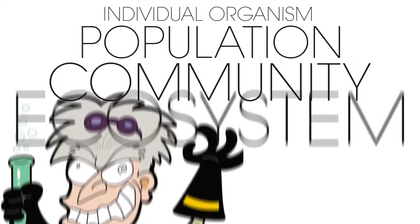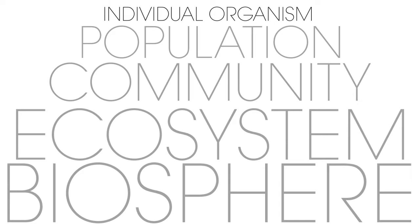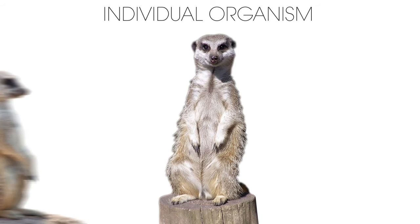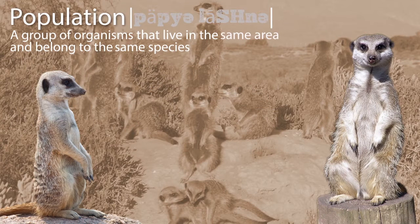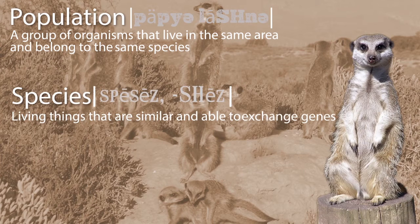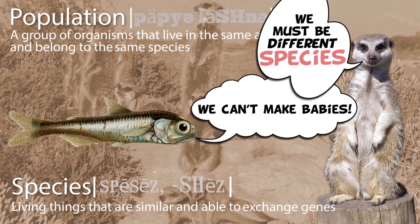Ecologists, the men and women who study ecology, have organized living things and environments in different ways. It starts with an individual organism, or a single life form. This individual organism probably belongs to a population, or a group of organisms that live in the same area and belong to the same species — species being living things that are similar and able to exchange genes. So think, if they can't make babies together, then they are more than likely not the same species.